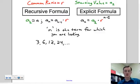If it's hard to remember which is which, this one's longer. 'Recursive' has nine letters, 'explicit' has eight. So the shorter word goes with the shorter formula, the longer word with the longer formula.